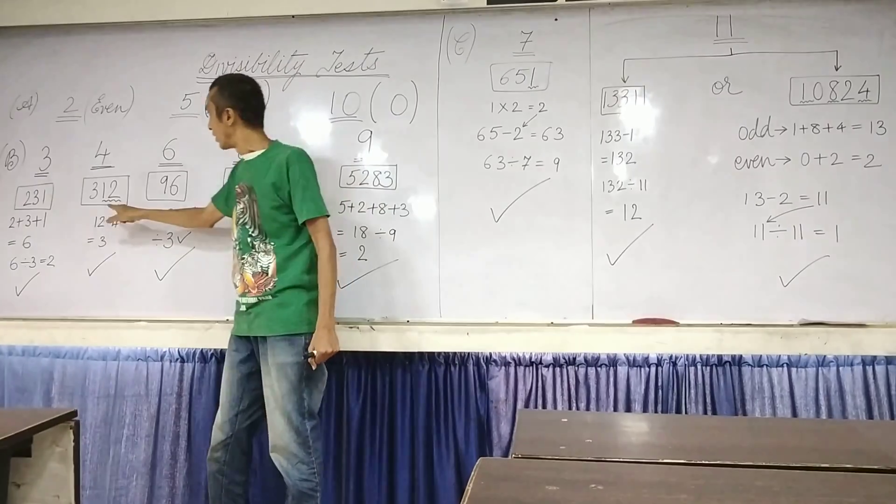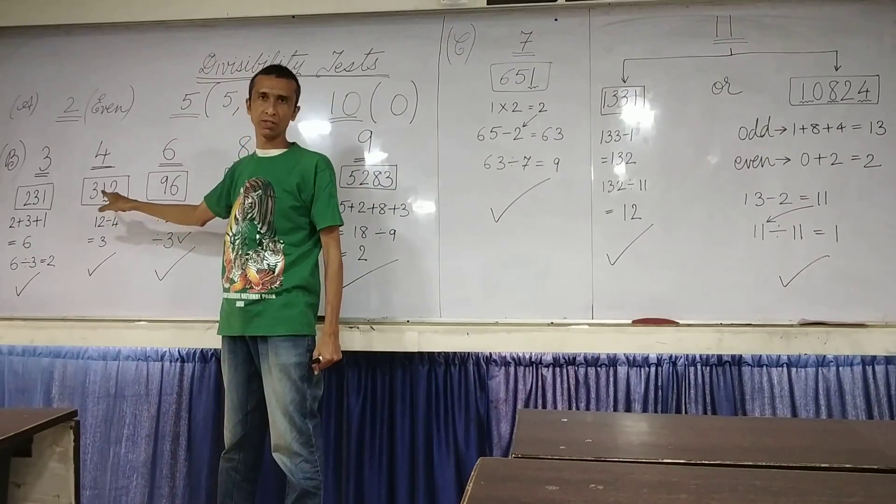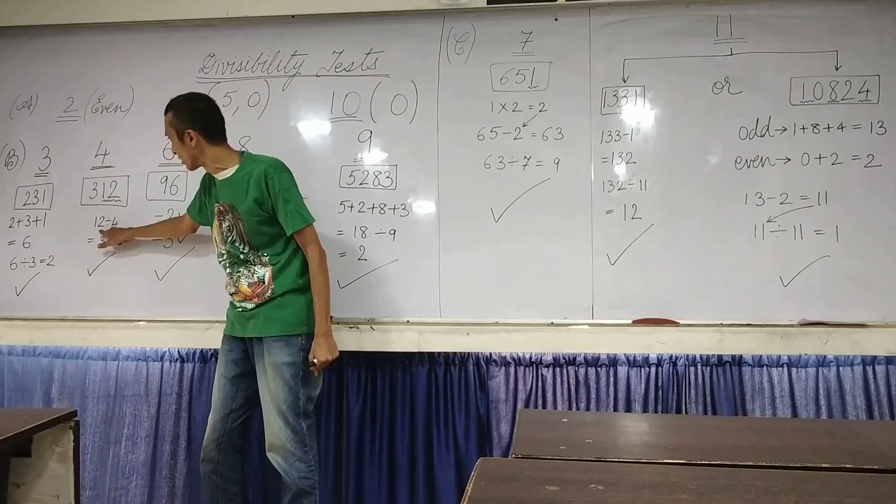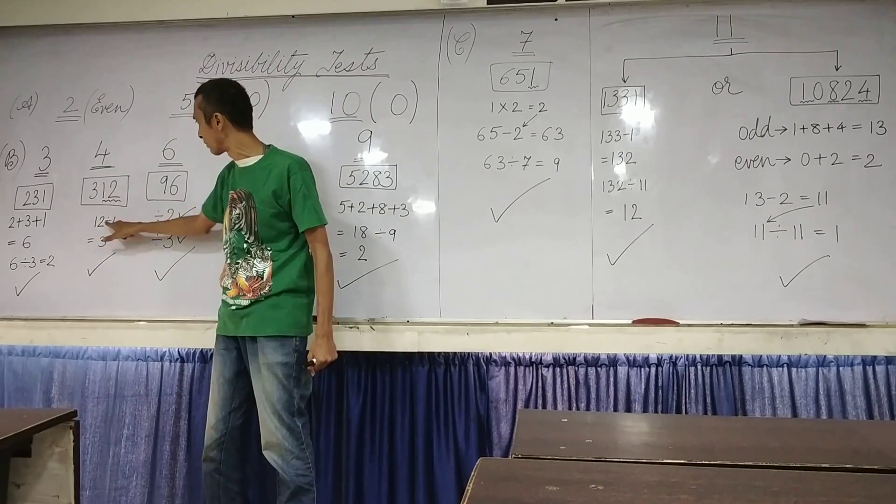For 4, you take the last 2 digits. If the last 2 digits, here we have 12, it is divisible by 4, then this number is divisible by 4.